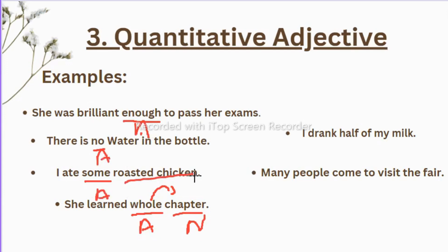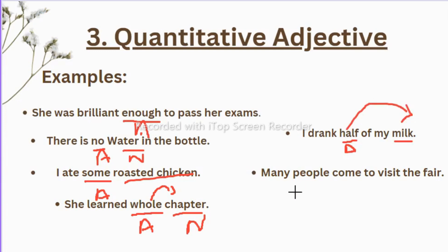Roasted chicken is a noun, water is a noun, exam is a noun. I drank half of my milk — 'half' is also an adjective showing the quantity of the milk. Many people come to visit the fair — 'people' is a noun and to show the quantity you use the word 'many,' which is the adjective here.